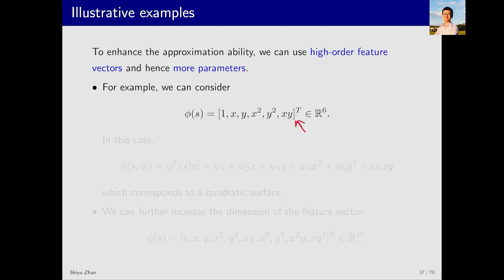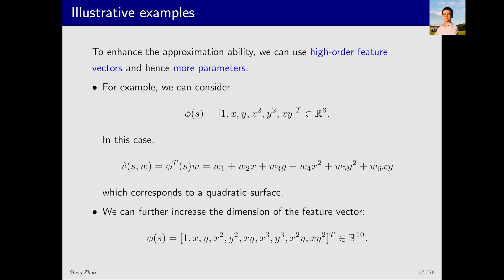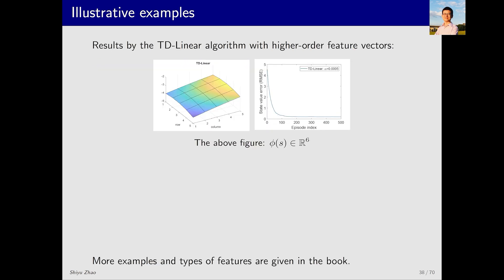Here we choose a feature vector phi s equals 1 x y x squared y squared x y. Compared to the previous feature vector, this new feature vector has quadratic terms for x and y, so the order is higher. The corresponding function v hat is this, which includes quadratic terms in x and y. Therefore, the corresponding surface is a quadratic surface. Compared to the previous plane, this surface can fit the surface of true state values better. We can further increase the dimension of the feature vector and the number of parameters. For example, we could add the cubic terms of x and y. The corresponding v hat would then be a more complex surface in three-dimensional space, and its fitting ability would be stronger.